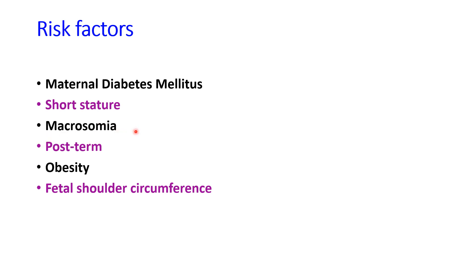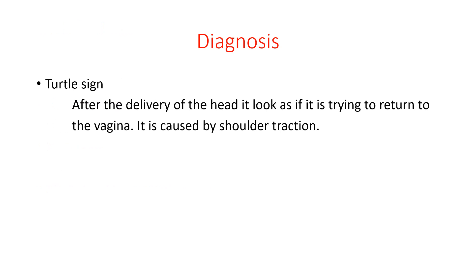Fetal macrosomia is another risk factor — a large biacromial diameter of more than 10 centimeters. Post-term pregnancy: if the pregnancy extends beyond 40 weeks, the baby continues to grow, making shoulder passage more difficult. Obesity of the mother increases the chance of fetal macrosomia, which may lead to shoulder dystocia. Finally, a large fetal shoulder circumference due to genetics or unknown reasons — a biacromial diameter more than 10 cm — may also cause impaction.